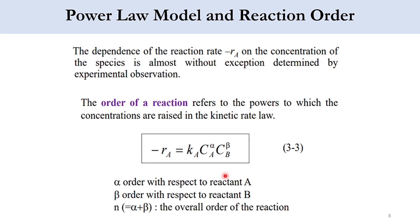The power law equation −R_A = K_A × C_A^α × C_B^β gives the rate as a function of the specific reaction rate constant and the concentrations of reactant species. Note this applies to irreversible systems; for reversible systems, product concentrations must also be included. We will address that step by step.